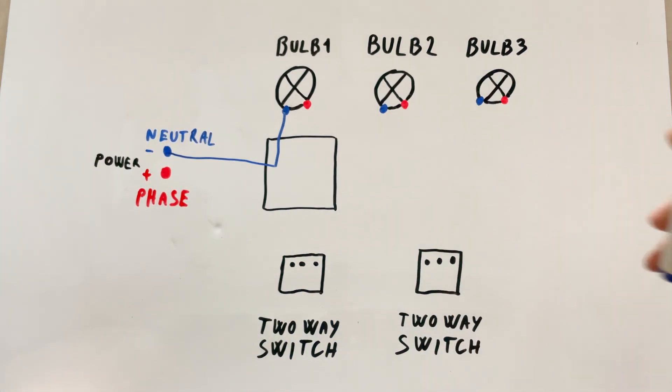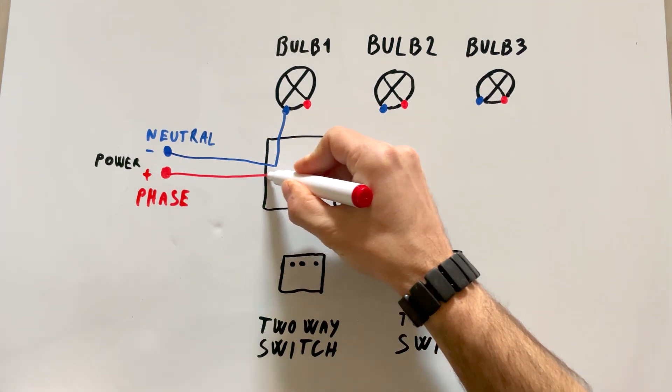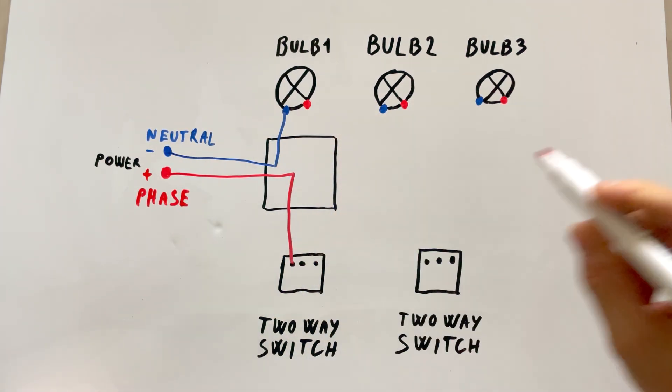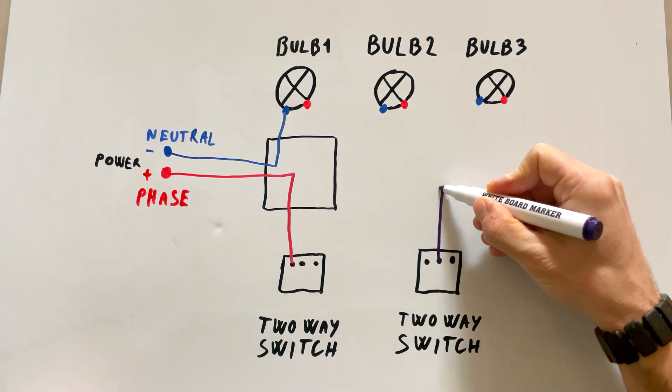As always, the neutral wire goes directly to the bulb, and the phase wire connects to the first switch. Then, we link the two switches together.